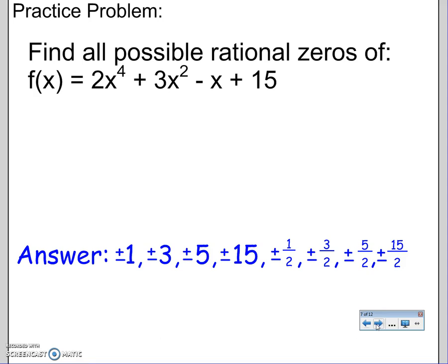Here's the practice problem: find all the possible zeros. Remember, do P divided by Q. You should get that answer. There should be 16 possibilities. You don't have to plug them in, just find the possibilities and that's it. Again, this is Mr. Nguyen, thanks for watching, see you in class.